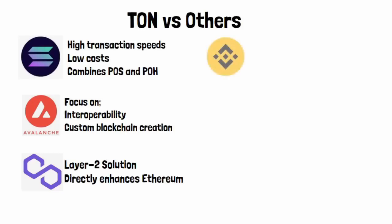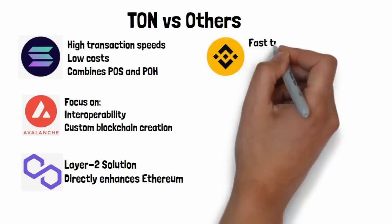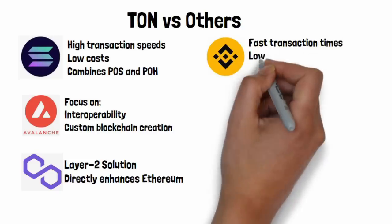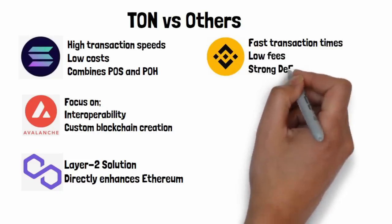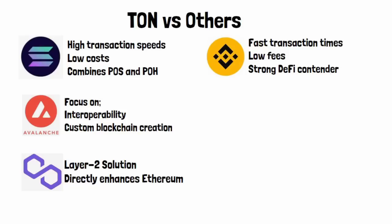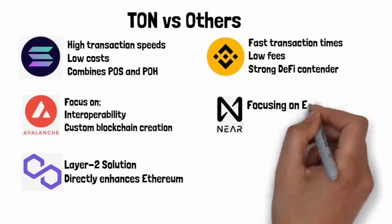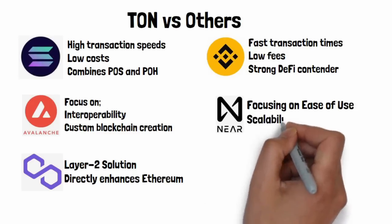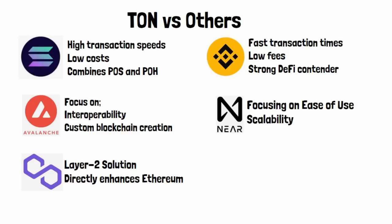Binance Smart Chain is another high-speed blockchain that benefits from being part of the Binance ecosystem, one of the largest crypto exchanges in the world. Its fast transaction times and low fees make it a strong contender, especially in DeFi. Finally, there is NEAR Protocol, focusing on ease of use and scalability through sharding, making it ideal for developers and users alike.